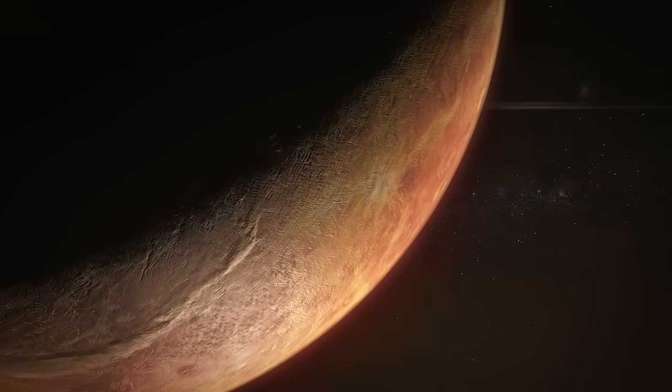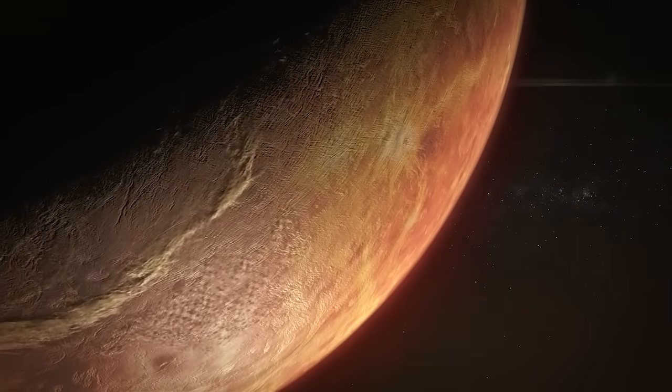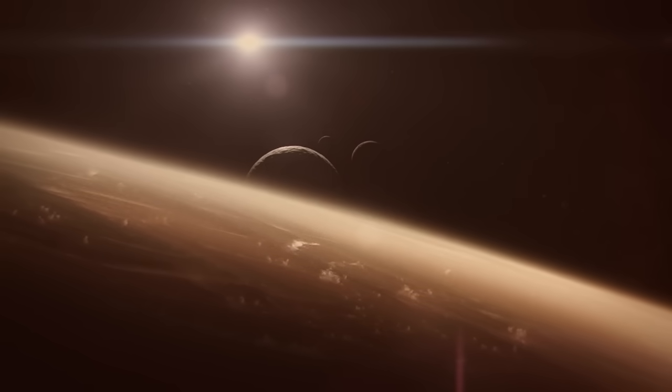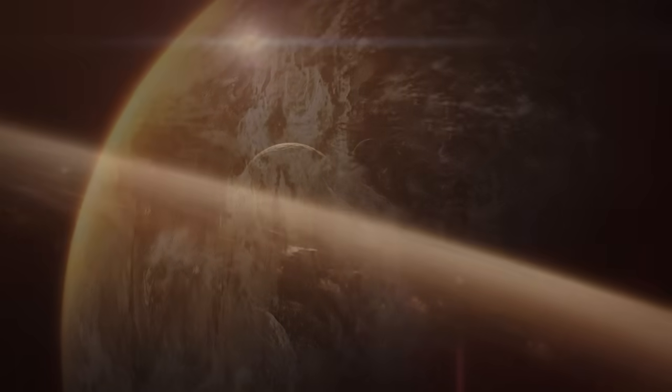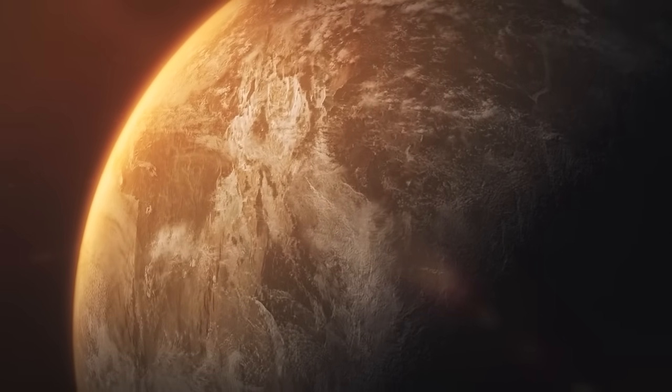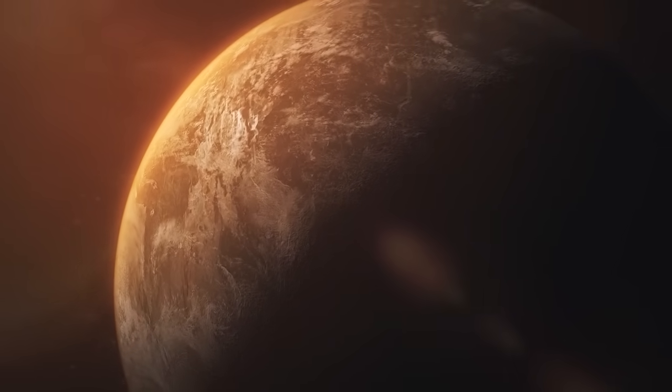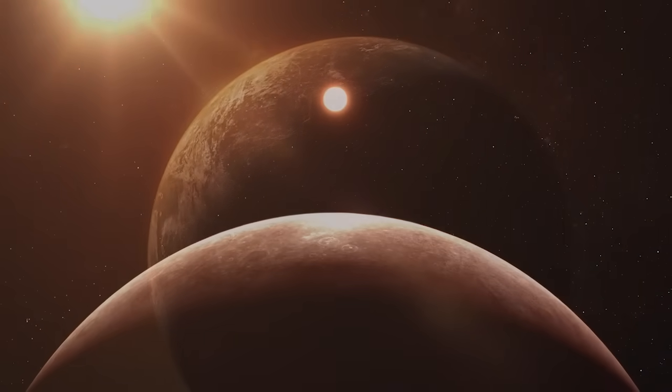If its temperature is barely warmer than Earth's, it is still a few hundred degrees warmer, which makes it closer to Venus than to Earth. Yes, LHS 475 b is very close to its star, LHS 475. It takes only two days to go around it.